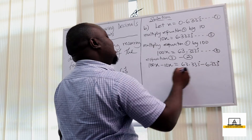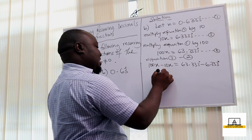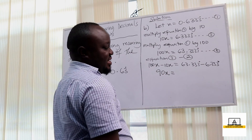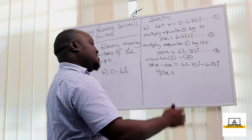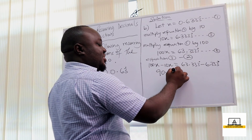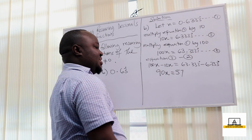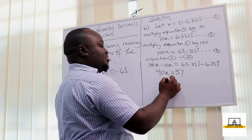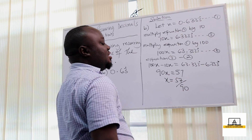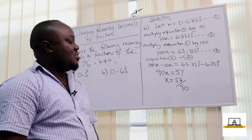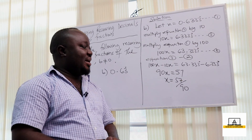This gives us 90x = 63 minus 6, which equals 57. So x = 57 over 90. If it is possible to simplify further, go ahead and simplify the fraction.